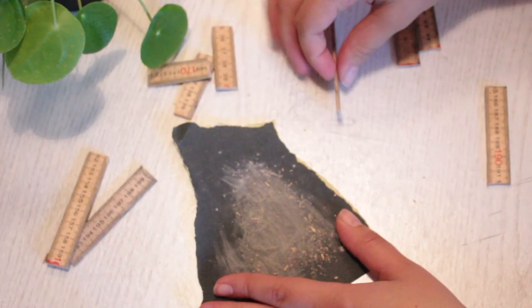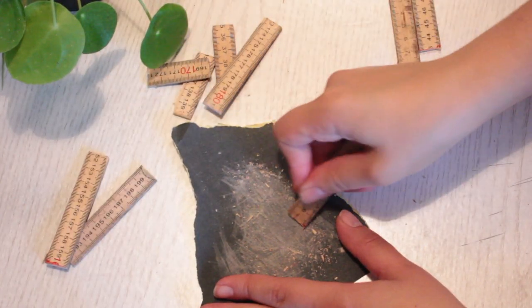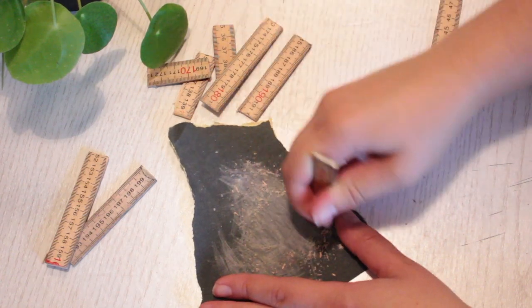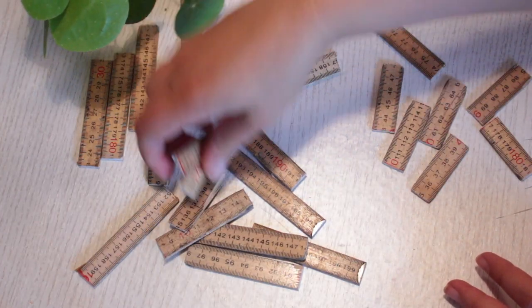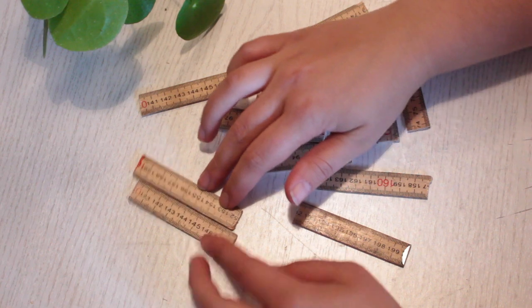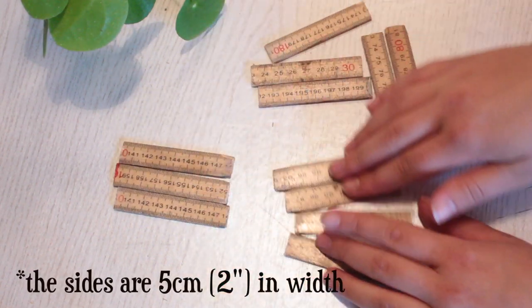Take some sandpaper and smooth out all of the edges so you don't get any splinters. Remove all of the smaller pieces and put them aside because we need to work on the larger ones to create the sides.